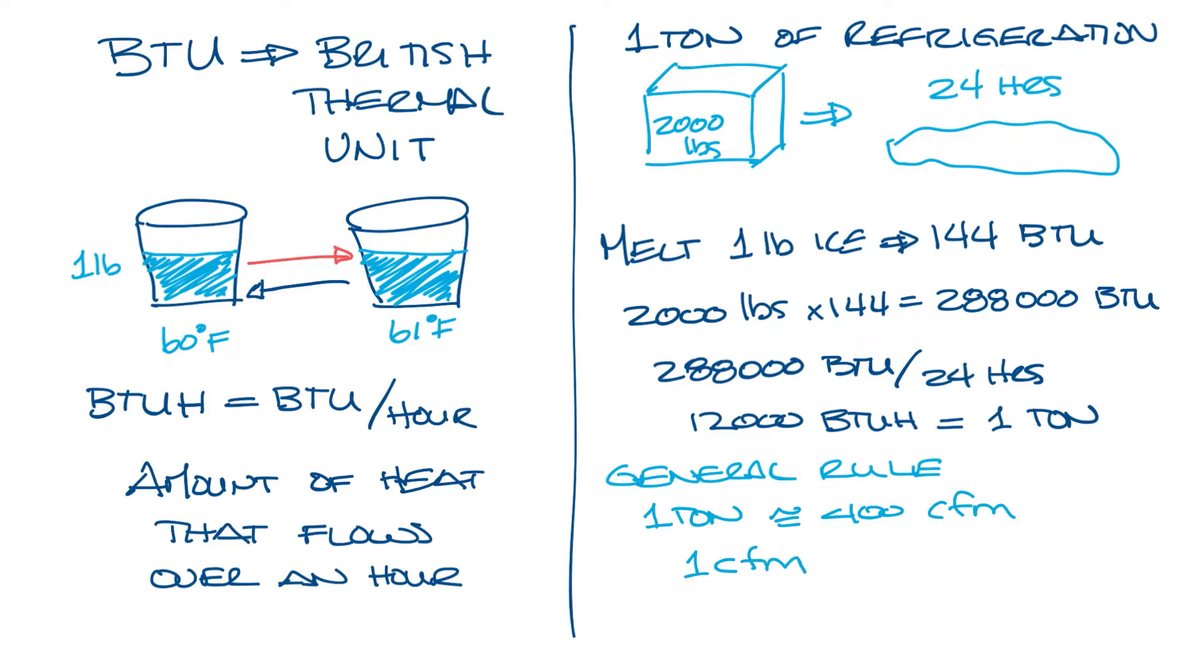Another good rule of thumb is that you want to supply one CFM per square foot. Now again, this is based on your application, but let's say this is a typical office. So if you know you have a 10,000 square foot office space, you're going to know that you probably need around 10,000 CFM to supply it.